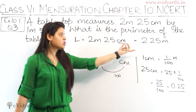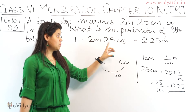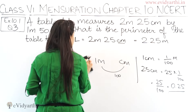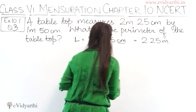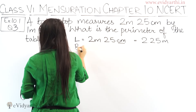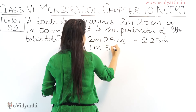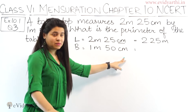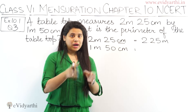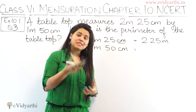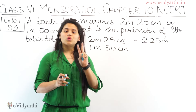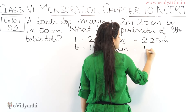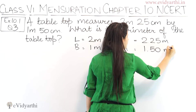I will show you how to make it short — make sure the decimal has 2 digits. So this is our length. Now for the breadth, the breadth is given as 1 meter 50 centimeter. Again, 1 meter equals to 100 centimeter. To convert to decimal, place the decimal after 2 digits, so I can write it as 1.50 meters.